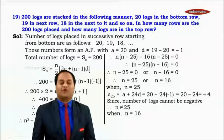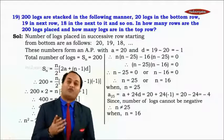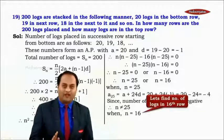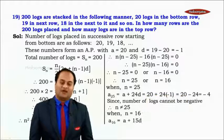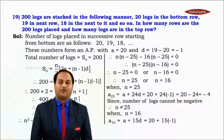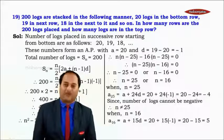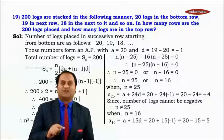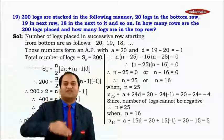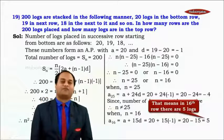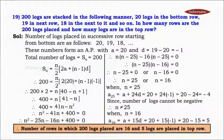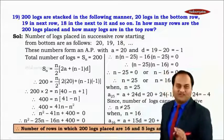Therefore n = 16. Now let's find the number of logs in the 16th row, which is the top row: a16 = a + 15d = 20 + 15×(−1) = 20 − 15 = 5. So there are 16 rows in total, and the top row (the 16th row) has 5 logs.